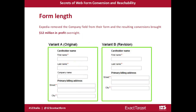For instance, you can see two versions of a web form here. The one on the left has the company name field, and the one on the right doesn't. A company called Expedia removed this field and ran a test. They had plenty of visitors and customers to try this, and it meant a huge conversion increase for them — even $20 million in profits overnight.